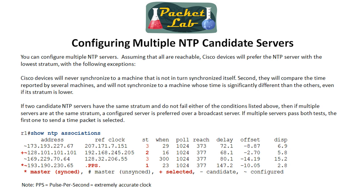If you have three machines set up as servers — a stratum one and two stratum twos — normally the device will choose the stratum one. But if that stratum one is configured with the wrong time, say it claims it's 1993 while the two stratum twos say it's November 2010, your Cisco device is smart enough to trust the two that are in agreement, even though the other is a lower stratum.